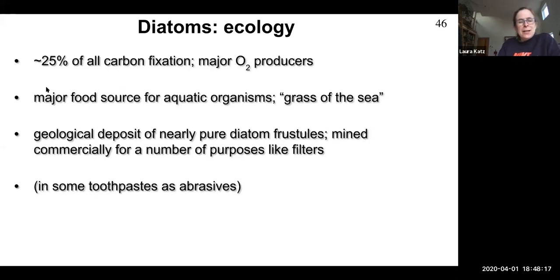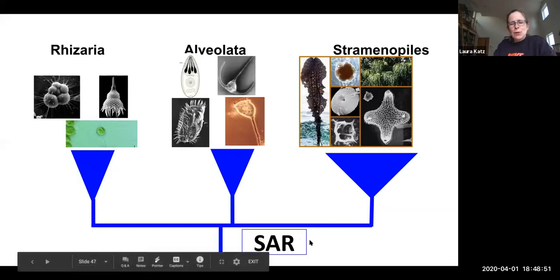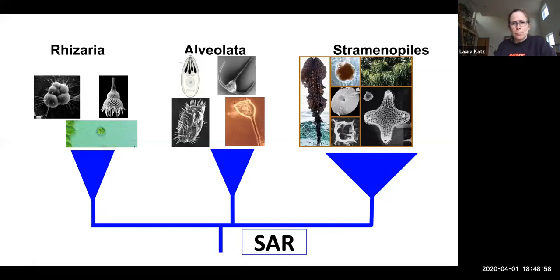So in the end, I want you to know about diatoms, people claim they do 25% of all carbon fixation. I think if you counted, everybody likes their group to be important, so I would give a big grain of salt to that. But they are major oxygen producers, they're a major food source for aquatic organisms, they're really important for geology, and if you watched the video I posted, you saw somebody flying over diatoms in a helicopter. They're also commercially important for things like filters, and they're even present in some toothpaste as abrasives. So what I hope I did today was give you a little bit of background on this group SAR and a little bit more detail into this incredibly diverse and cool group called straminopiles. And I believe that is all I have for you for today. Take care, all.